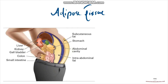So far what we have done is the epithelial tissue and the connective tissue. Epithelial and connective tissue are done, and now we are going to start off with another important tissue that is present in our body — it's called the adipose tissue.